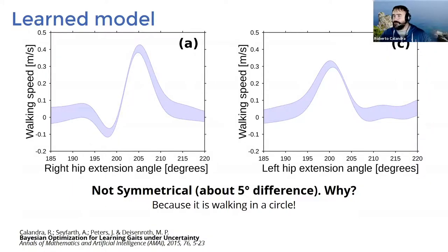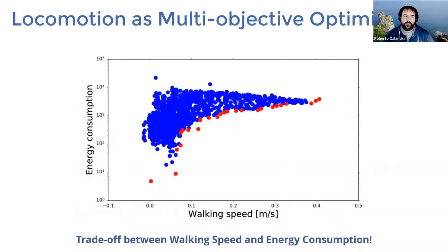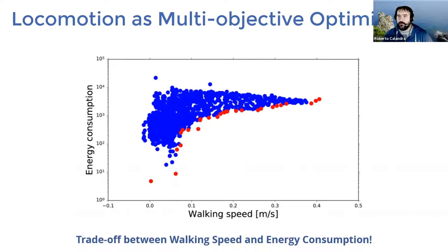I strongly recommend that people using Bayesian optimization always look into their model and belief to see what the system is actually learning. After this work, which was standard single objective optimization, we started looking at problems beyond single objective optimization. In particular, we saw a very clear trade-off between walking speed of the robot and energy consumption — the faster you want to go with a walking robot, the more energy you need. This created an interesting line of research: how can we do multi-objective Bayesian optimization?